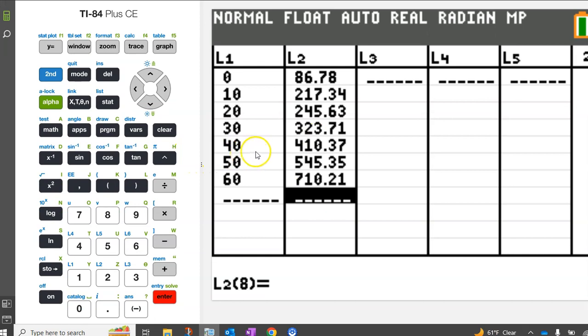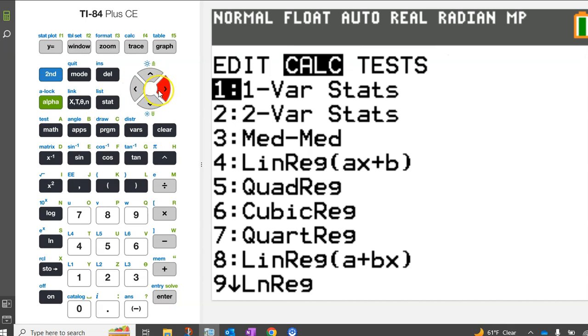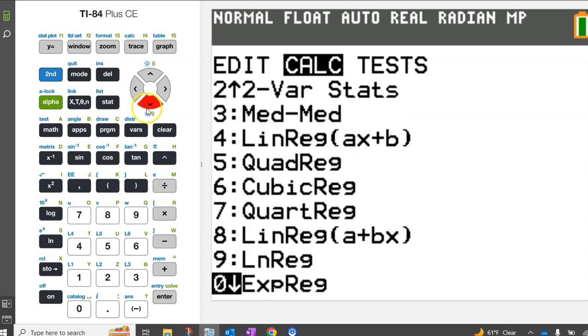To calculate the exponential regression model, hit STAT, switch to the CALC menu, and choose Exponential Regression, which is not on the screen right now, so scroll down until you see it, and hit ENTER.